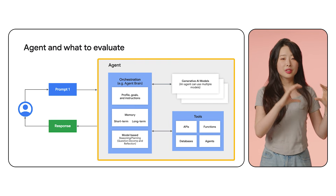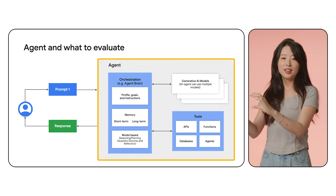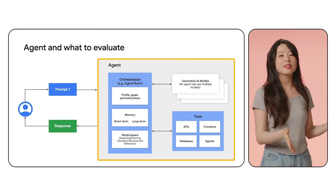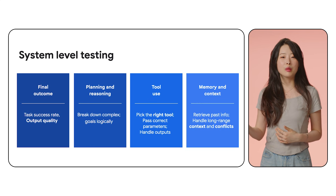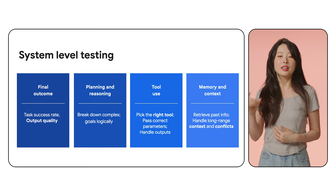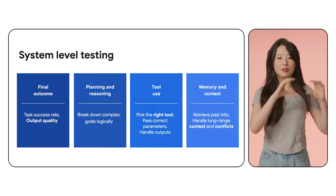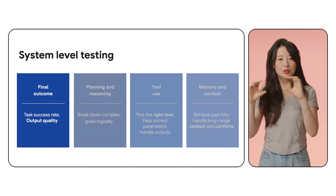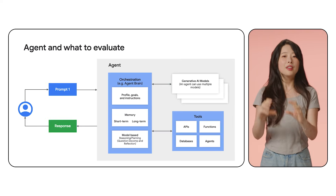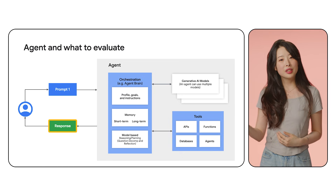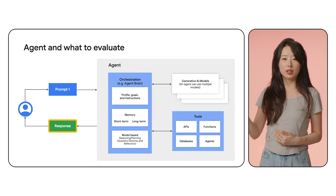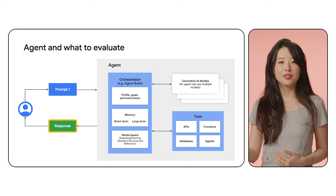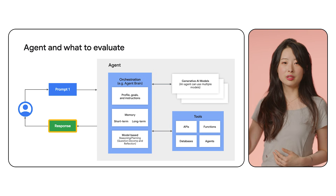And that is what we call system-level testing — it is not just checking one single string. Here is a full-stack checklist for system-level testing. The first thing to check is the final output: did it actually finish the job? We check task success rate, stepwise progress, output quality including coherence, accuracy, and clarity, and of course safety, including bias and prompt injection defense.